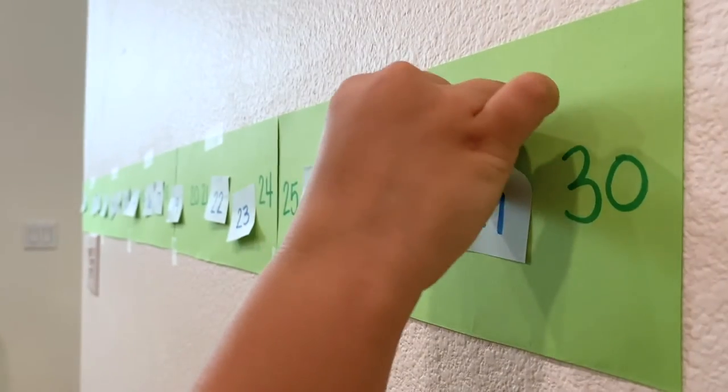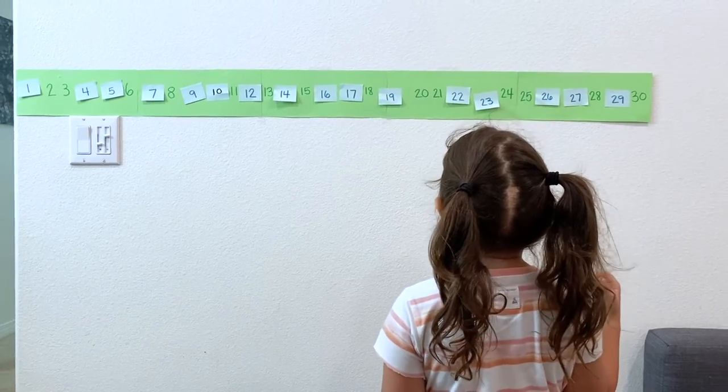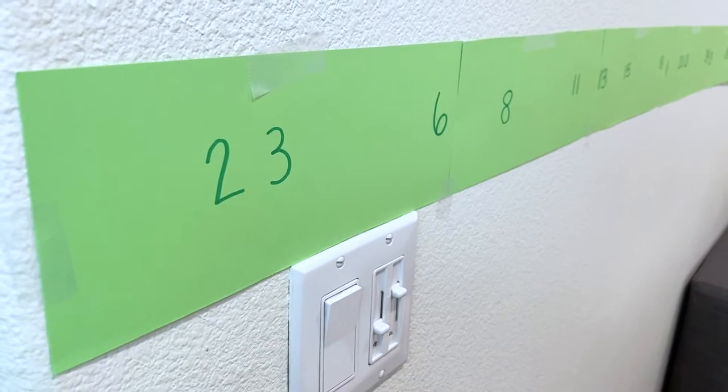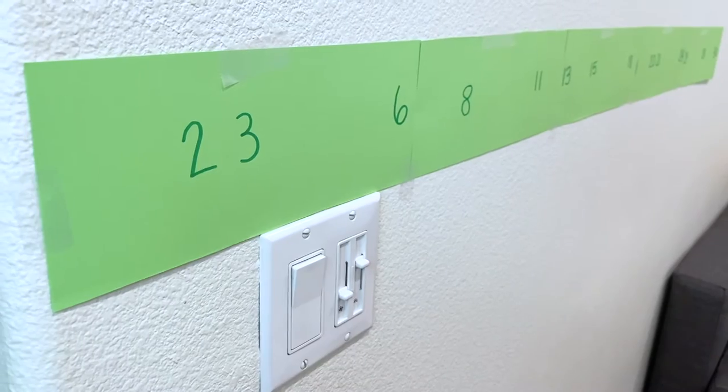Here's a math game for kinesthetic learners or for little ones that just need to get their wiggles out. I call it number hunt. Just make a number line on paper with missing numbers in between. You can number it to 10 or all the way to 100 if that's where your child's at.